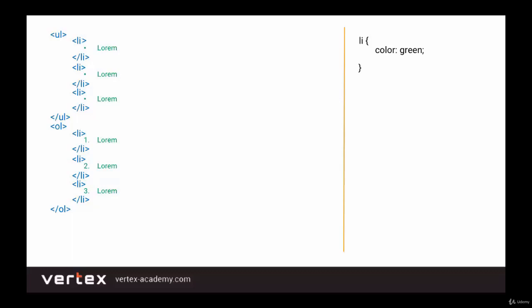But how do we make it so that the first element of the unordered list is orange, while all the other ones stay green? Well, for that we need to use a class. We're just going to write class and then the name of the class — let's call it 'change', for example. Then in CSS, we refer to the class by writing dot change, and then in the curly brackets we add color orange. And now our first element is in orange. Let's add another property — font weight bold. And now the first element is not only in orange, but also in bold.